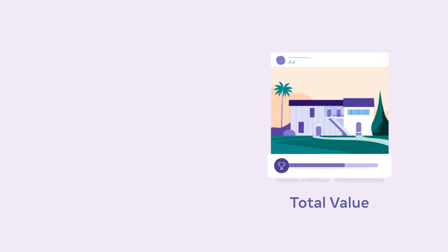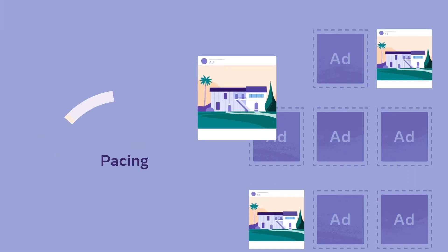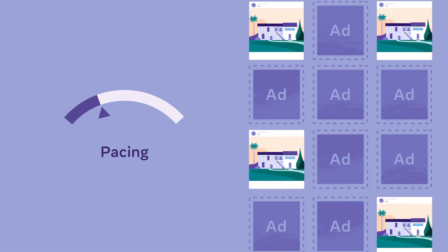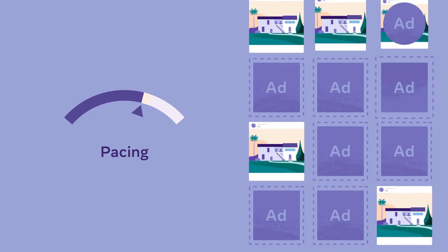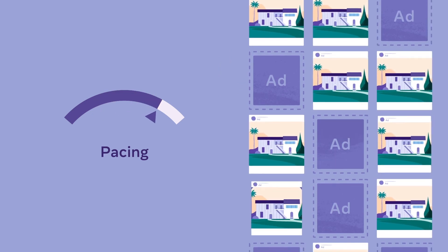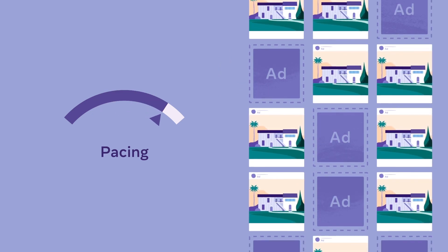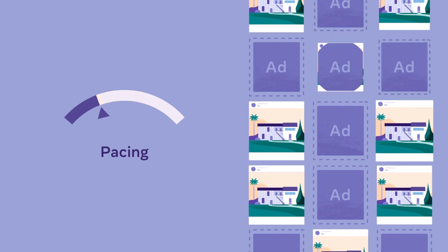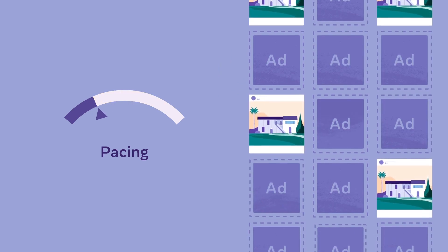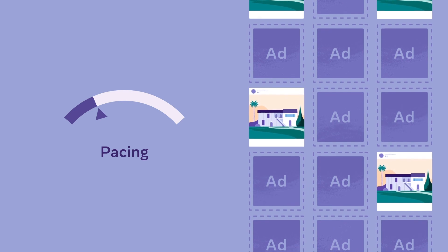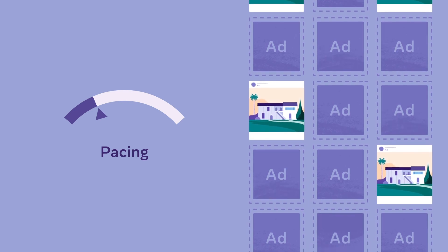Nora hopes to run the ad for 10 days. A process in our system called pacing adjusts the ad's total value by either increasing or decreasing the advertiser bid. Without pacing, her entire campaign budget could be spent in just a few days.